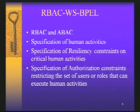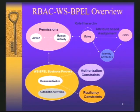To address the resiliency and access control problems in the context of WSBPL processes, we propose RBAC-WSBPL. RBAC-WSBPL is an authorization model that inherits features from traditional role-based access control and attribute-based access control models. Its main characteristics are that it allows the specification of resiliency constraints, the specification of human activities, and the specification of authorization constraints that restrict the set of user roles that can execute a human activity in the business process. This picture gives an overview of the main components that characterize our model.